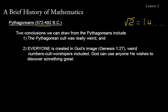We'll cover square roots in lesson 30. Integers — numbers without decimals, like -1, 0, 1, 2, 3, 4 — will be covered more in lesson 5. Two conclusions we can draw from the Pythagoreans: one, their cult was really weird — it's okay to say that, worshiping numbers is just strange. And two, everyone, including those in the Pythagorean cult, is created in God's image, as Genesis 1:27 says. So God can use anyone He wishes to discover something great, like the Pythagorean theorem — and Pythagoras made some great applications of it for us to use.